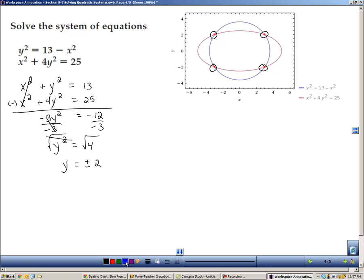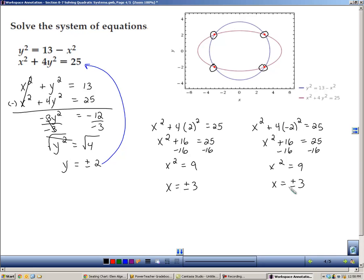Now to find the x, I have to take those y values and plug them in. I'm going to plug them back into the second equation. So we'll start with x squared plus 4 times positive 2. So x squared equals 9. Take the square root of both sides and you get x equals plus and minus 3. Now I'm going to plug in the negative 2. And because of the way squares work, this negative 2 becomes a 4 just like in the last one, and you end up with the same solutions, plus and minus 3.